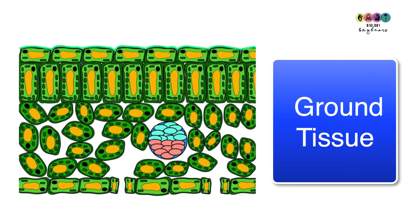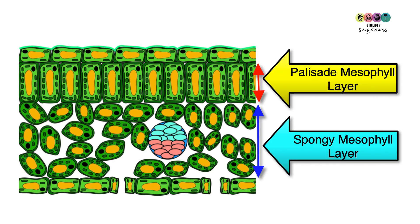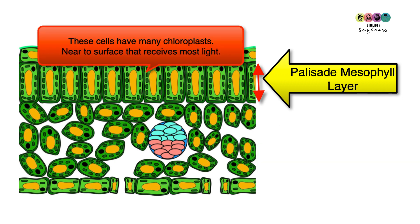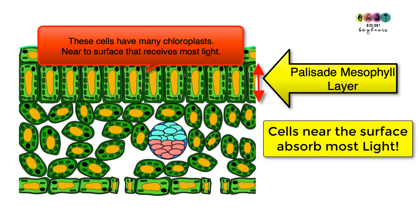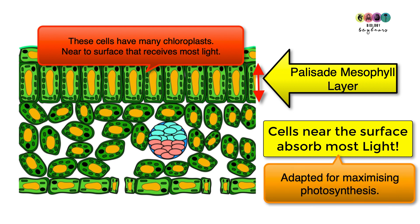The ground tissue makes up the bulk of the plant and is divided into two layers within the leaf: the palisade mesophyll layer and the spongy mesophyll layer. The palisade mesophyll cells contain many chloroplasts — far more than in the spongy mesophyll layer. This is because these cells are near the surface where light hits, so a lot of photosynthesis happens there — an important adaptation of the leaf.